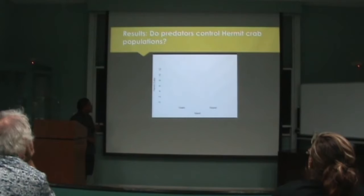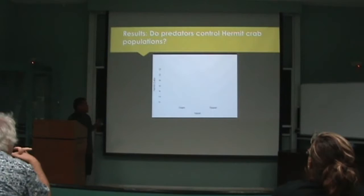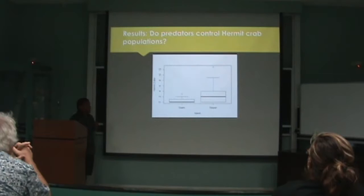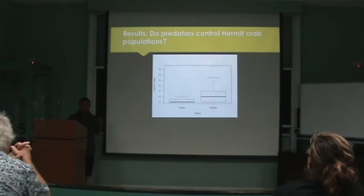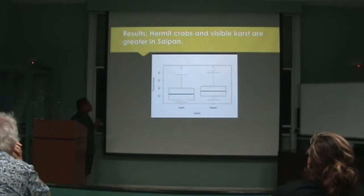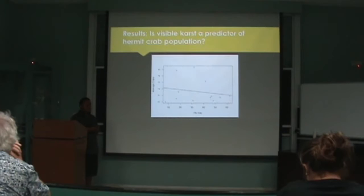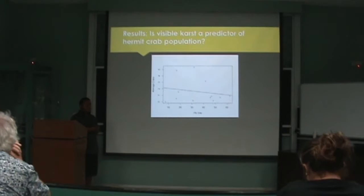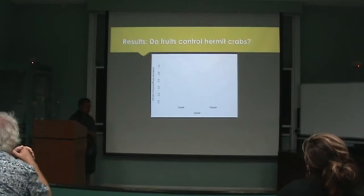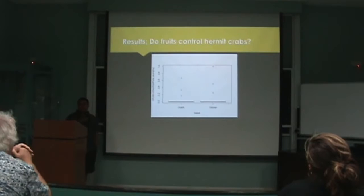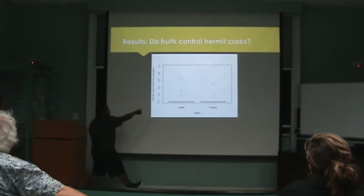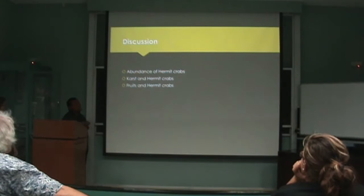For our results, on the y-axis we have the hermit crabs, and on the x-axis we have the two islands, Guam and Saipan. We found that there are more hermit crabs on Saipan than Guam. For percent karst between the two islands, we found that Saipan also has more karst than Guam. However, we actually don't have a correlation between the average number of crabs and the percent karst. For the fruits taken within our transects, there's not much fruit that was taken — it's not disappearing.